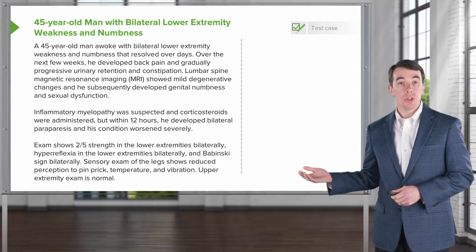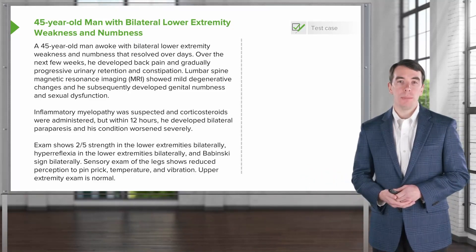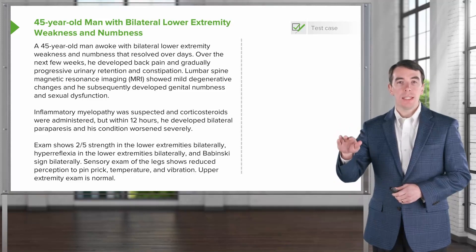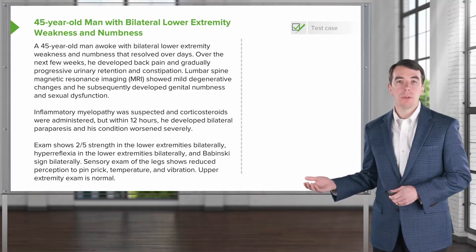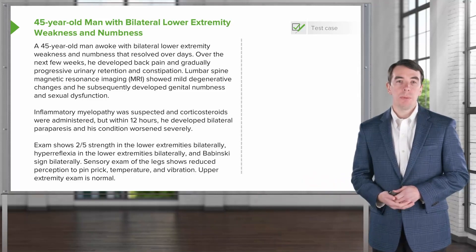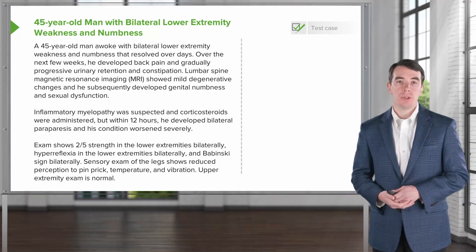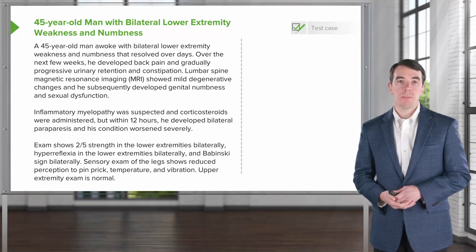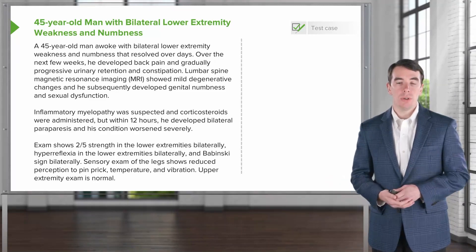Exam now shows two out of five strength in the bilateral lower extremities — he can't achieve anti-gravity strength in the legs. There is hyperreflexia in the bilateral lower extremities and bilateral Babinski signs, evidence of upper motor neuron dysfunction. Sensory exam shows reduced pinprick, temperature, and vibration in the legs. Upper extremity examination is normal.